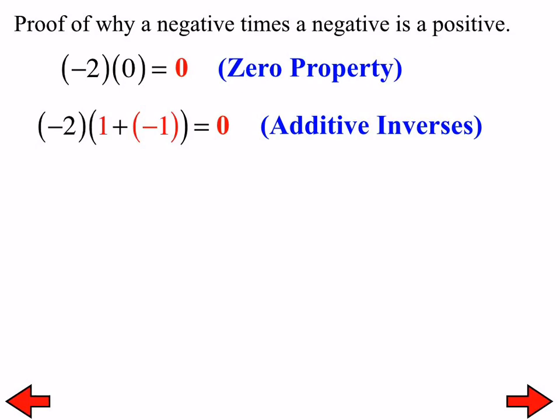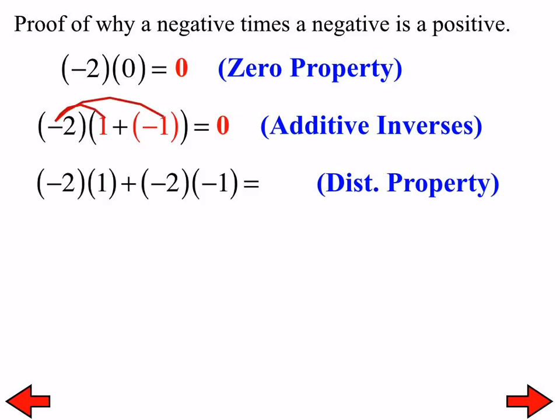Now, I'm going to use the distributive property. And, when I use the distributive property, I get negative 2 times 1 is negative 2. All right. It's negative 2 times 1, and then negative 2 times negative 1, like that. I haven't figured out any of that yet. And, obviously, that's supposed to be equal to 0, as we're continuing down.